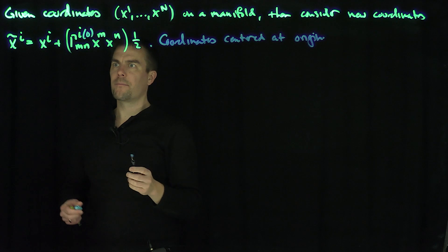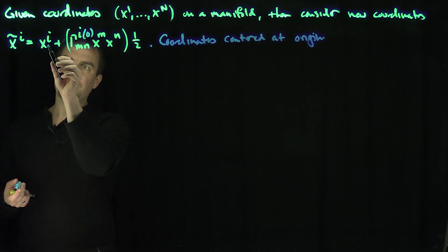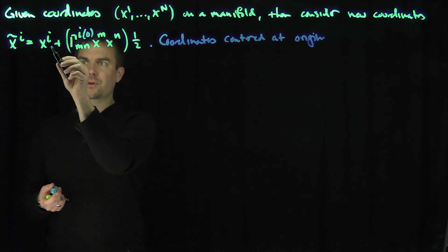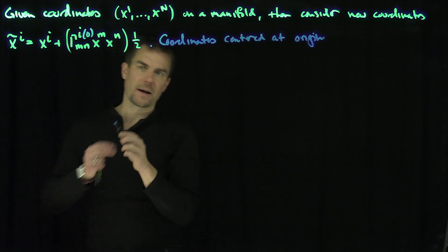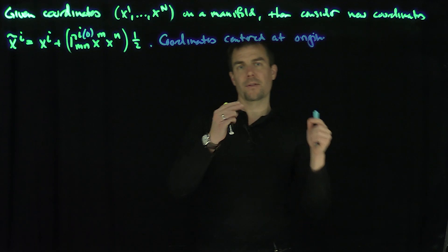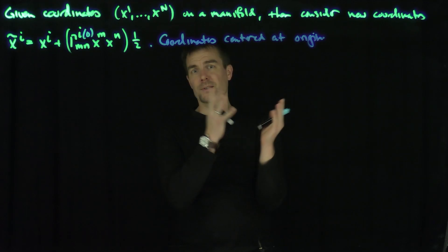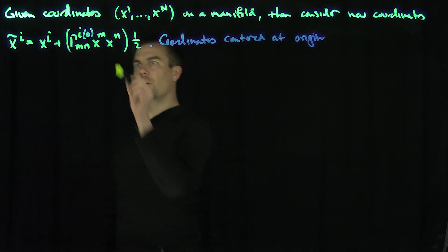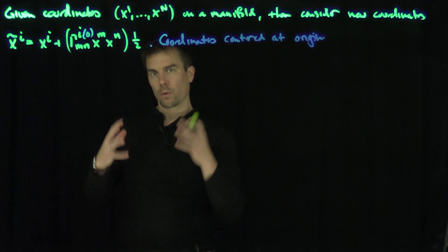They don't have to be centered at the origin. If they're not, you have to subtract off a p_zero here, a p_zero here, and a p_zero here — subtracting p_zero of i, p_zero m, and p_zero n. It's just too messy, so just do it at the origin. I'll shift my manifold so that point p is the origin; a linear transformation won't change my coordinates. The important fact is that this Christoffel symbol is evaluated at the origin.